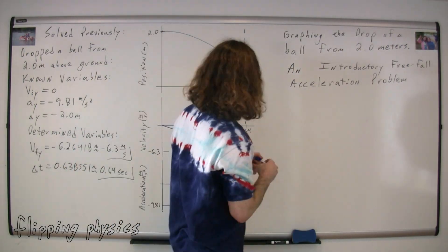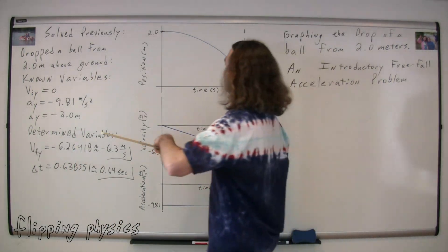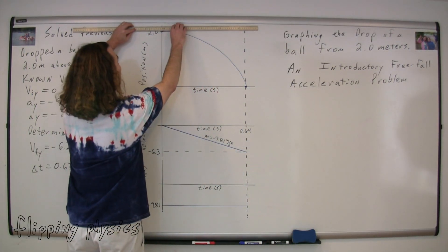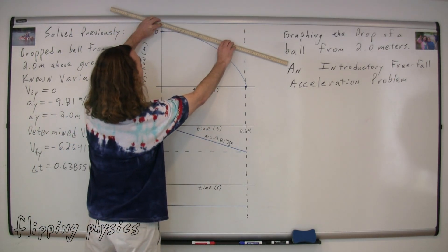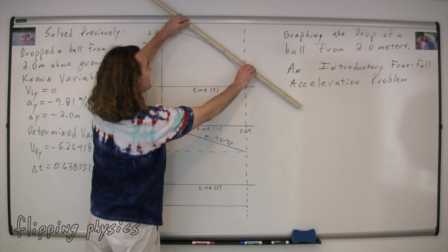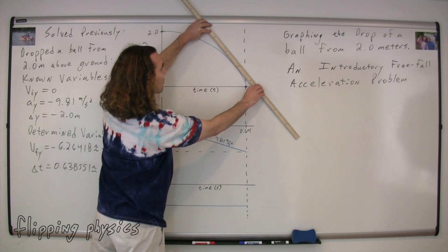How does it help us to figure out our position as a function of time graph to know that the slope of the position versus time graph is velocity? Well, the initial velocity is zero, therefore the initial slope of the position graph should be zero. And the velocity gets more and more negative as time goes by, so that is what the slope of the position graph should do. I can show, using my magic tangent line finder, that the initial slope is equal to zero, and as time goes by, the slope of the tangent line gets to be more and more negative.